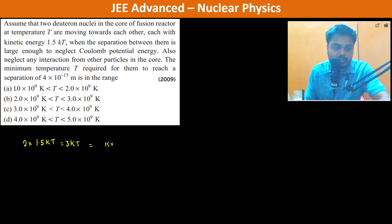So k into, now, the potential energy is the Coulomb potential energy between them, and this deuteron nuclei, so therefore, there is only one proton which is present.